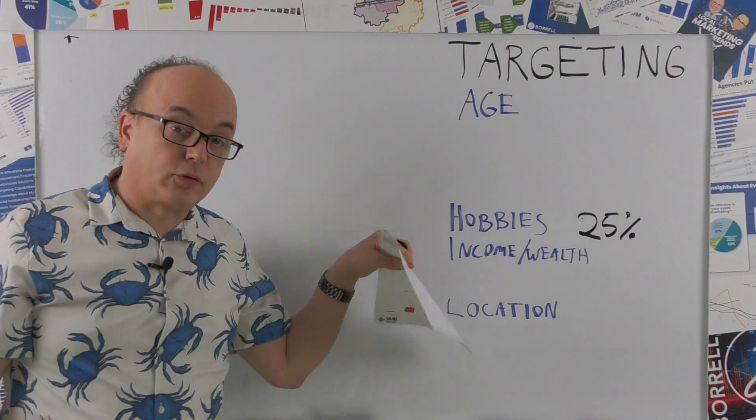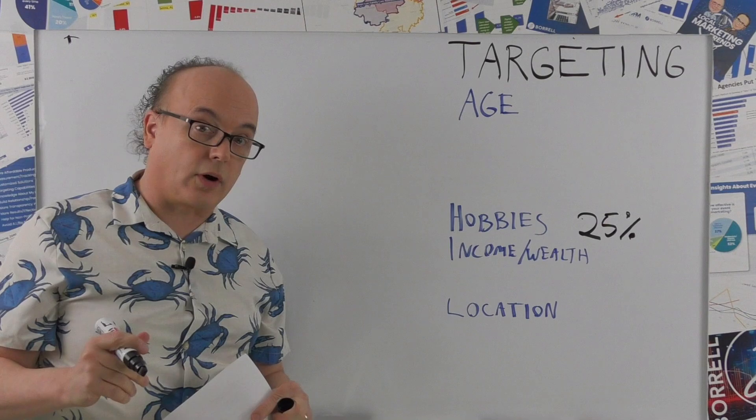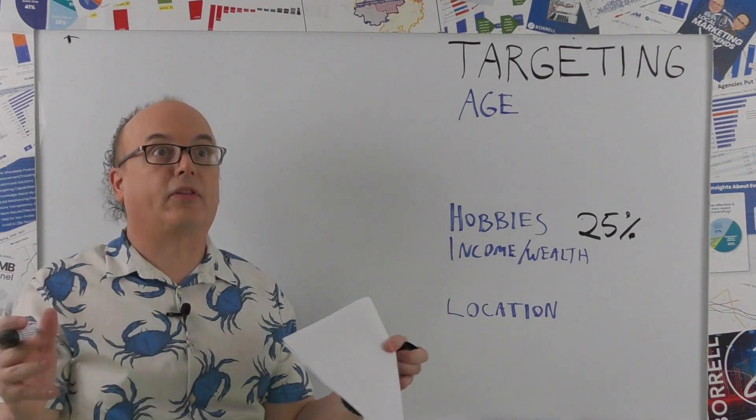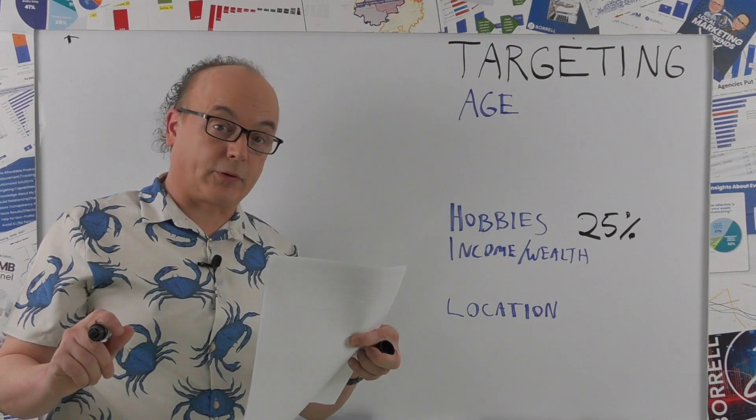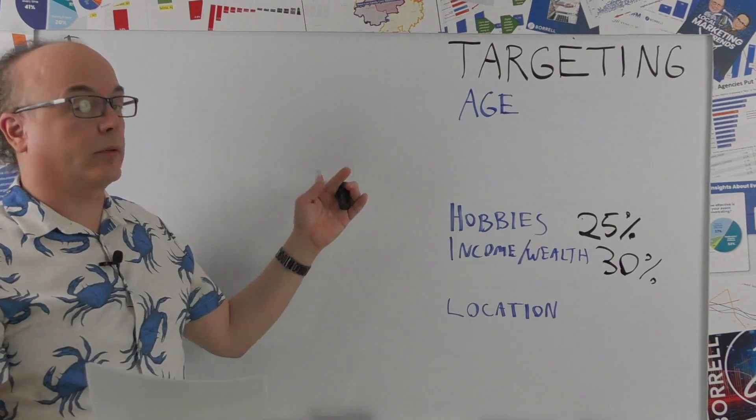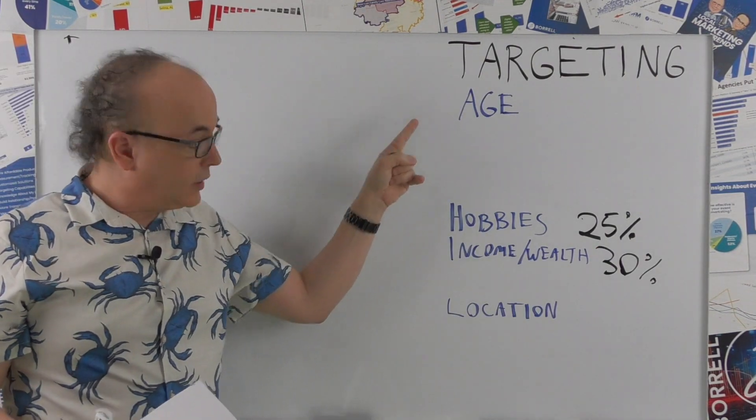Let's start with number four. Hobbies - 25% of the panel said that's how we target. In third place, with 30%, income and wealth, which of course by deductive reasoning leaves two: age and location.